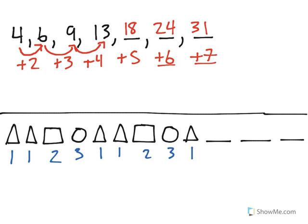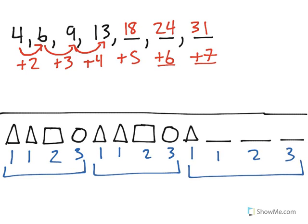And I see here that I have a pattern: 1, 1, 2, 3, 1, 1, 2, 3, 1, 1, 2, 3. Which means that our next will be 1 was a triangle, 2 was the square, and 3 was a circle.